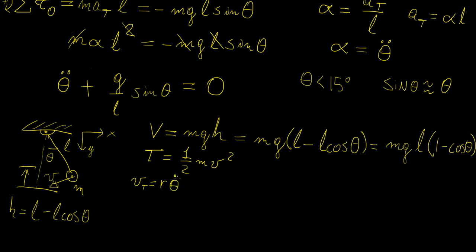Well velocity tangential is actually equal to the radius of rotation times the angular velocity. So basically this is the equation that we use here so this is going to become half of M times, in this case R is just L, so we have L squared times the angular velocity squared.